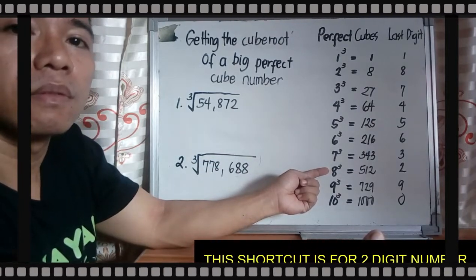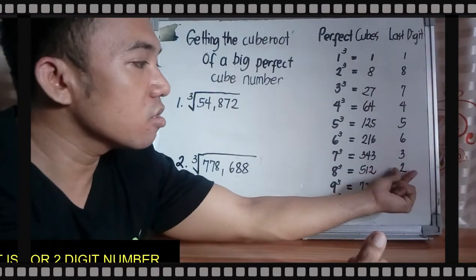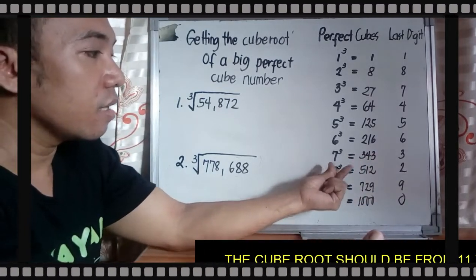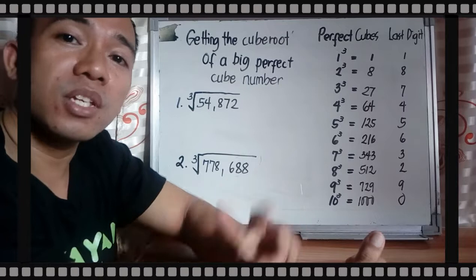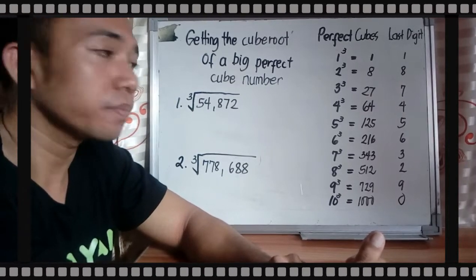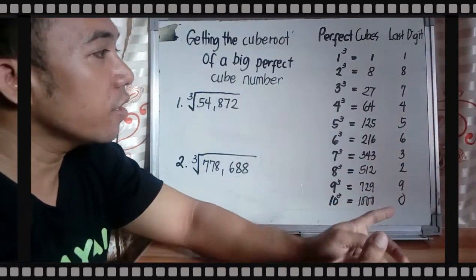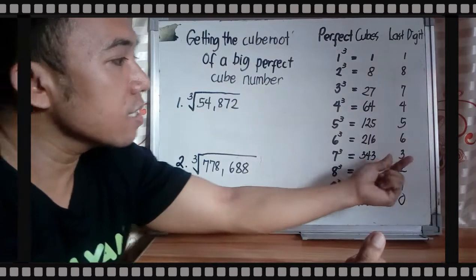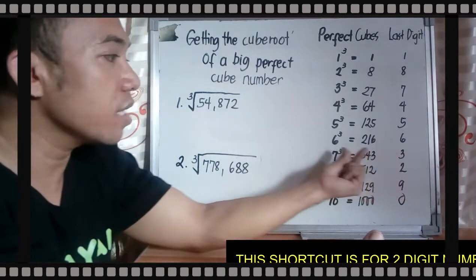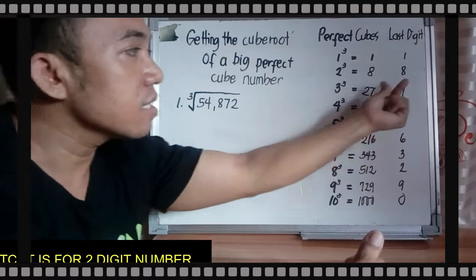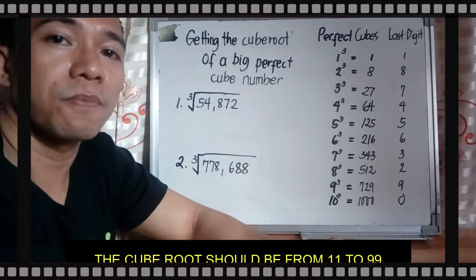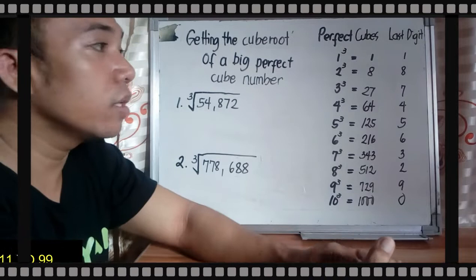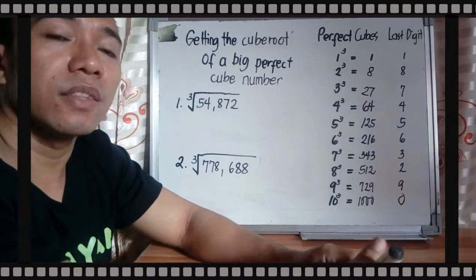Look at 2 and 8. If your last digit is 2, you will use 8. If your last digit is 8, you will use 2. So they will just interchange. Another is if your last digit is 3, you will use 7. If your last digit is 7, you will use 3. Another interchange. But the rest you will use the last digit and then locate the perfect cubes.